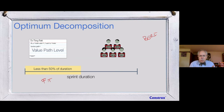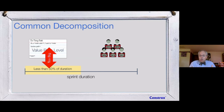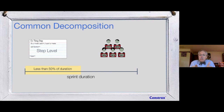I use the 50% rule: I want to be confident I can get this done in a sprint. But reality comes in differently. If the value path is too big for the sprint, we break it down to the next level — the step level — and ask the same question: can we fit this in 50% of the sprint duration? If yes, perfect — good fit for the team.